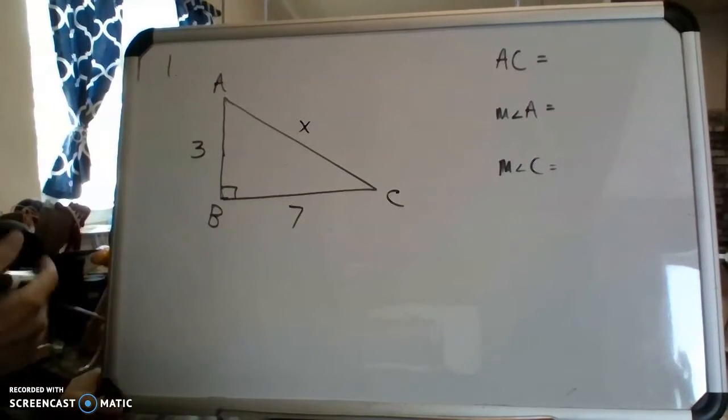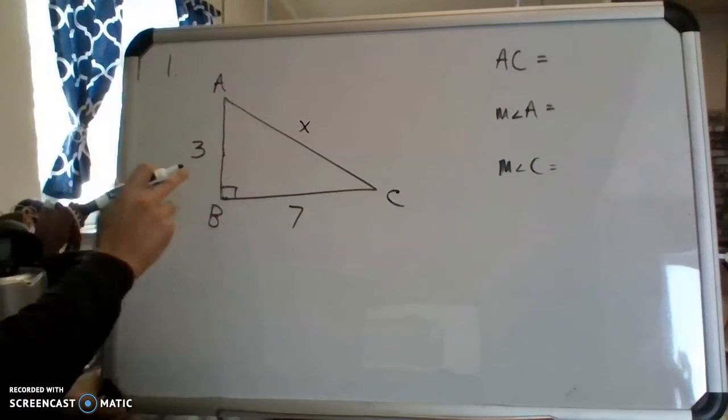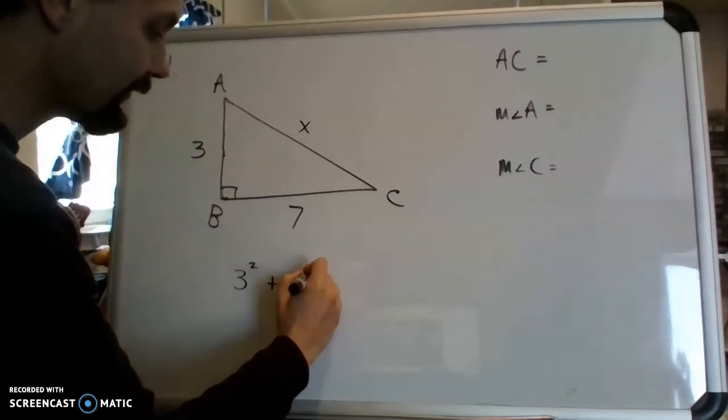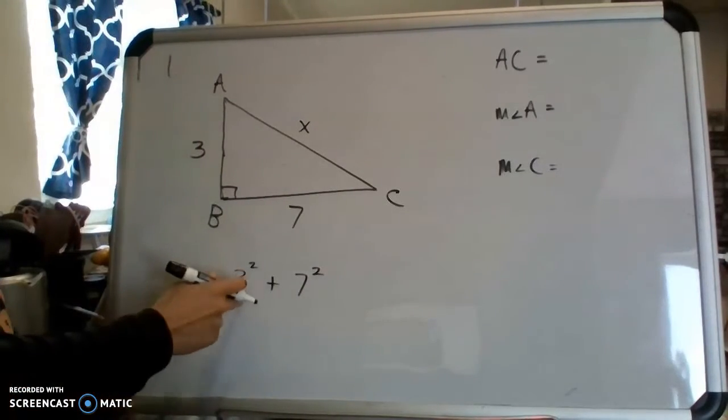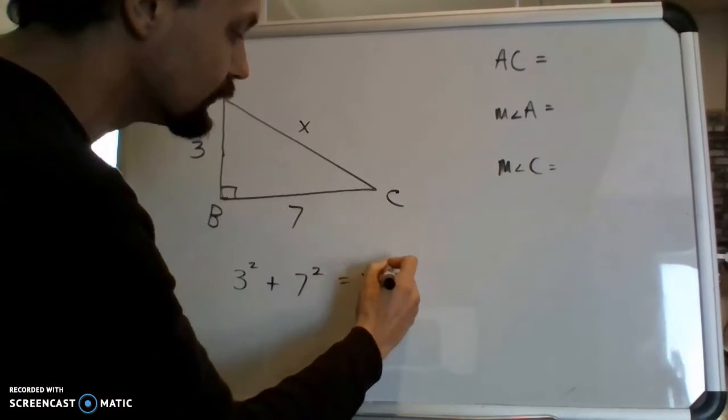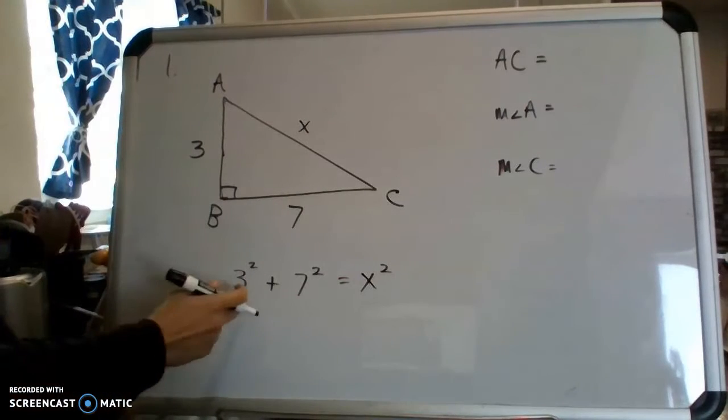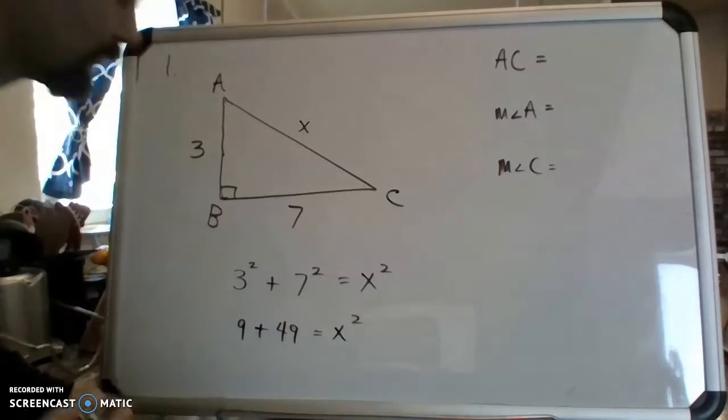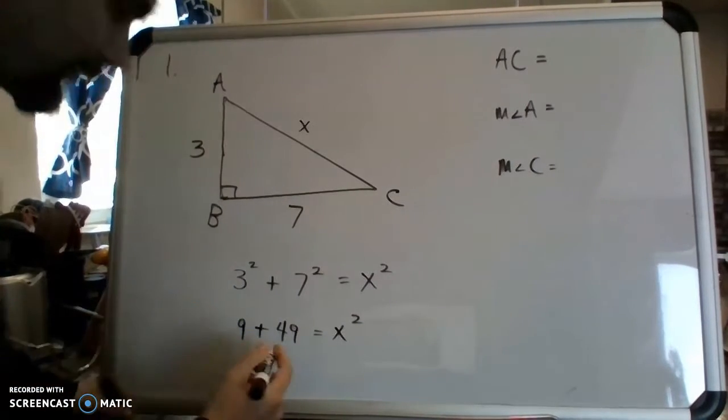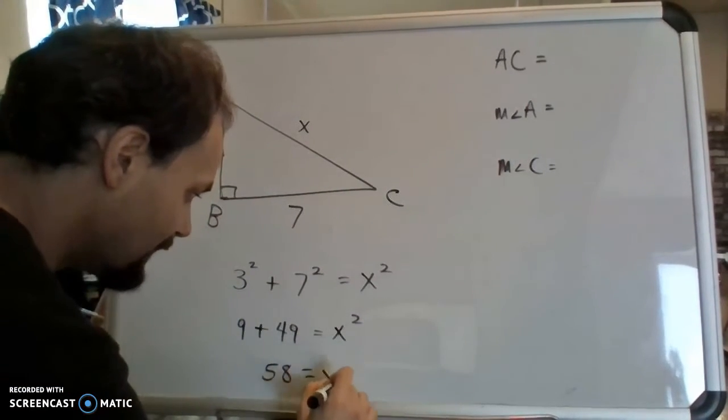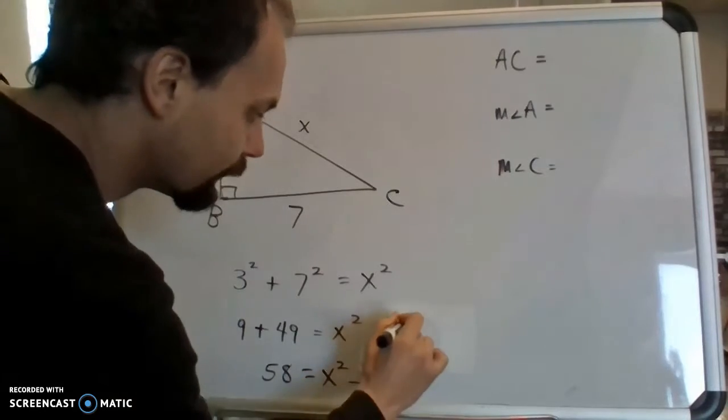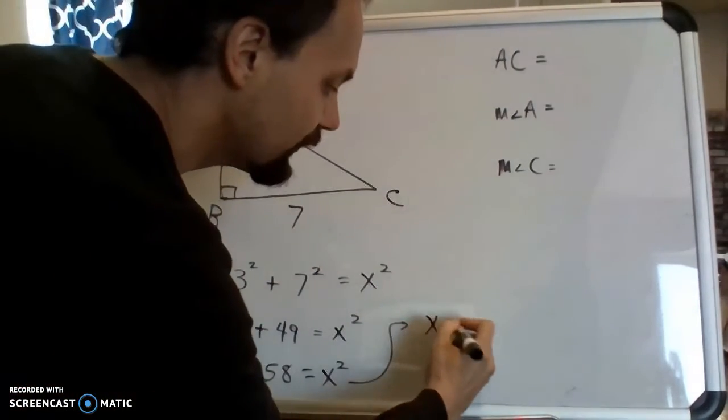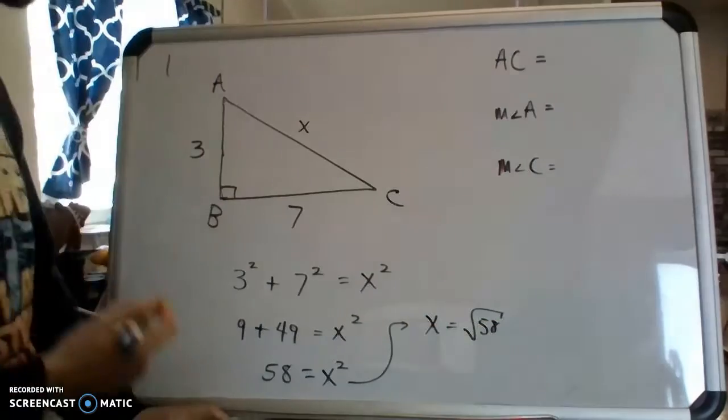We'll call that side X for the moment. So I'm going to plug these into Pythagorean theorem using X as the hypotenuse. So that means the 3 and the 7 are the legs. That would be 3 squared plus 7 squared equals X squared. So that would be 9 and 7 squared would be 49, so that's going to be equal to X squared. Add 9 and 49 together and you'll get 58 equals X squared. Then in order to get X alone you would need to square root both sides. So we find that X would come out to be the square root of 58.